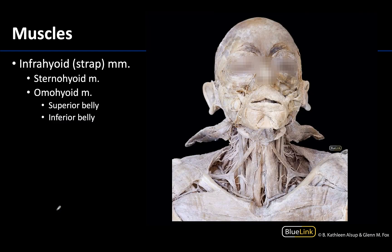Moving into the infrahyoid or strap muscles: these muscles largely occupy the area inferior to the hyoid. So here's your hyoid here — these strap muscles will be inferior to the hyoid but superior to the sternum. They will also be medial to the carotid sheath, as you can see the carotid sheath components here. This is true for all infrahyoid muscles excepting the inferior belly of the omohyoid.